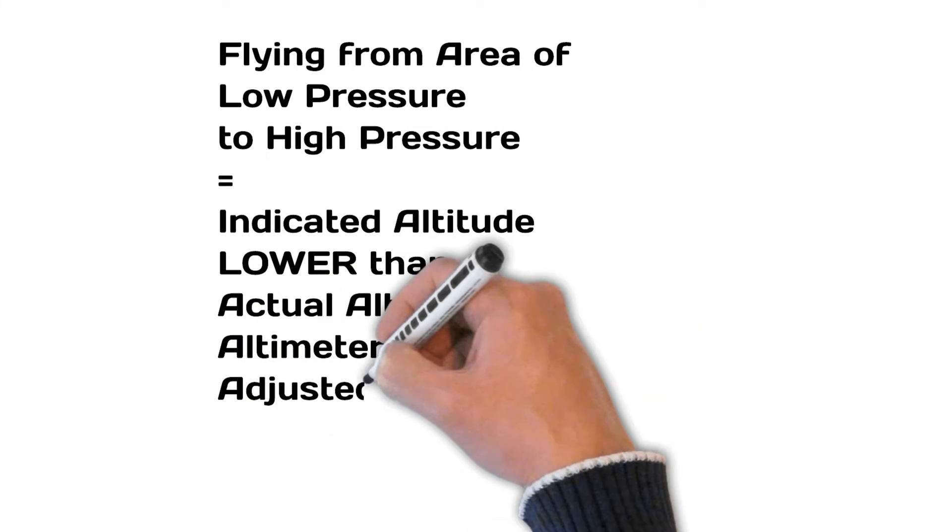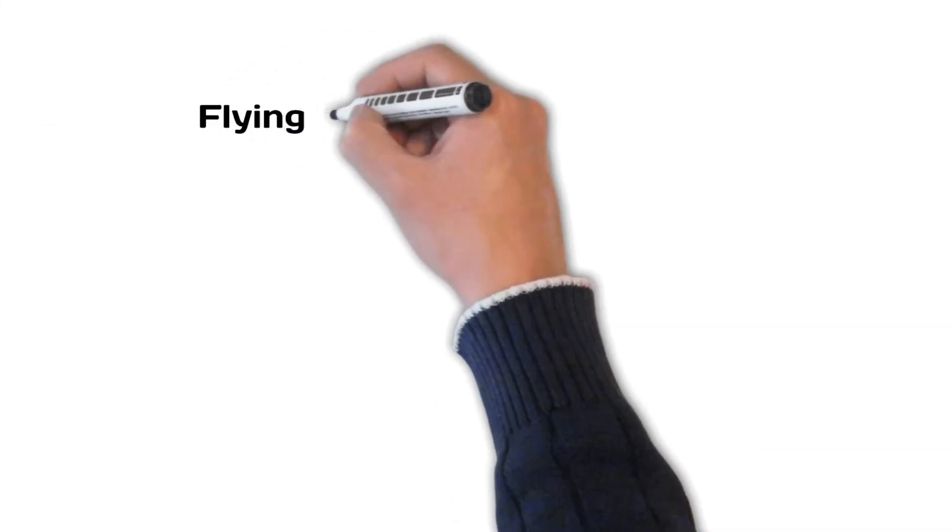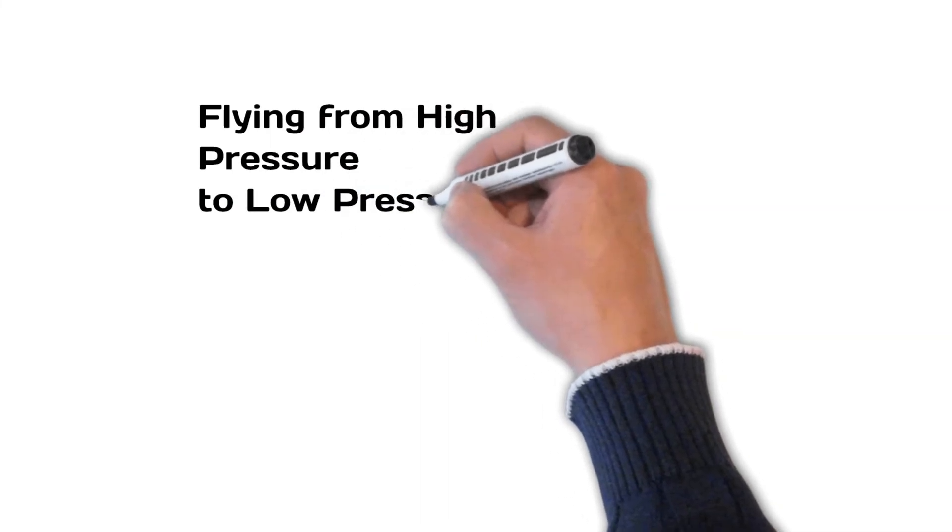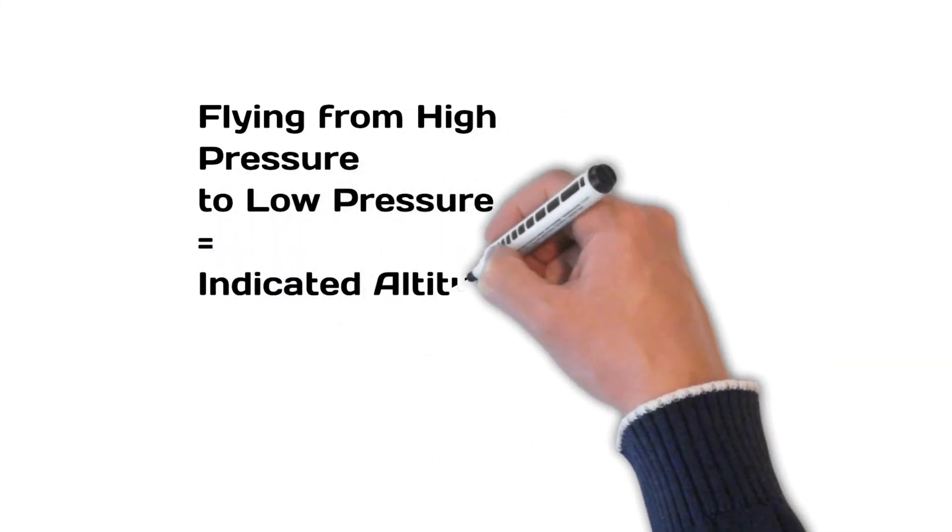Conversely, the opposite is true. If a pilot flies from an area of high pressure to low pressure, the indicated altitude on the altimeter would be higher than the actual altitude, if the altimeter setting wasn't adjusted to the correct setting.